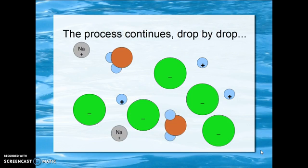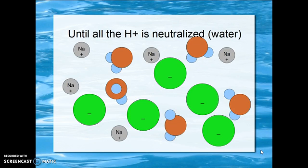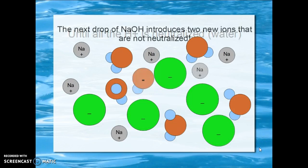The process continues drop by drop until by adding five sodium hydroxide drops we neutralize all the hydrogen ions and turn it into water. Now we've got of course sodium ions in place.